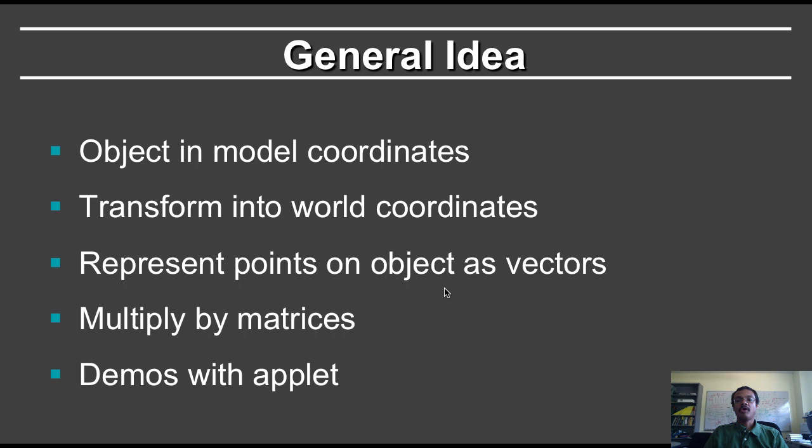Let's give an overview of the general idea of how this lecture will proceed. We will in general have the object in model coordinates. We will transform this object into world coordinates. The points on the object will be represented with vectors, and they will be multiplied by matrices, which correspond to the different transformations. Demos will be shown using the applet I just showed you.